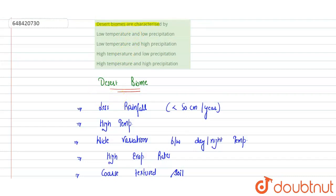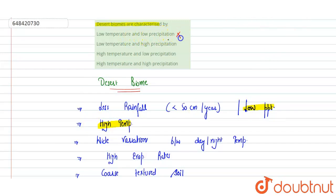Here, looking at the options in terms of temperature and precipitation: desert biomes have low precipitation, giving them dry or xerophytic conditions. They are characterized by low precipitation and high temperature. Option A — low temperature and low precipitation — incorrect. Option B — low temperature and high precipitation — incorrect. Option C — high temperature and low precipitation — correct. Option D — high temperature and high precipitation — incorrect. Option C is the correct answer.